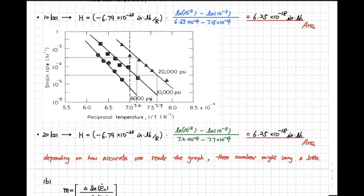For 20 KSI: 10 to negative three is equal to 7.2, and 10 to negative five is equal to 7.7. Using the Boltzmann constant with the same procedure, I find 6.25 as the activation energy. Depending on how accurately one reads the graph, these numbers may vary a little. However, these minor changes will cause only very minor differences in total lifetime, so please make the procedure clear when you solve the problem.